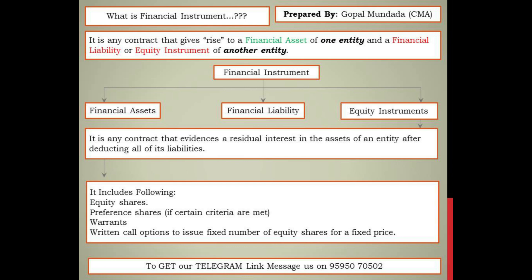Now we discuss equity instrument - it means a residual interest in the assets of the entity after deducting all its liabilities. This is basically the net worth of the company: total assets reduced by all outside liabilities equals the residual interest. Equity instruments include equity shares, preference shares, warrants, and call or put options to issue a fixed number of equity shares at a fixed price.